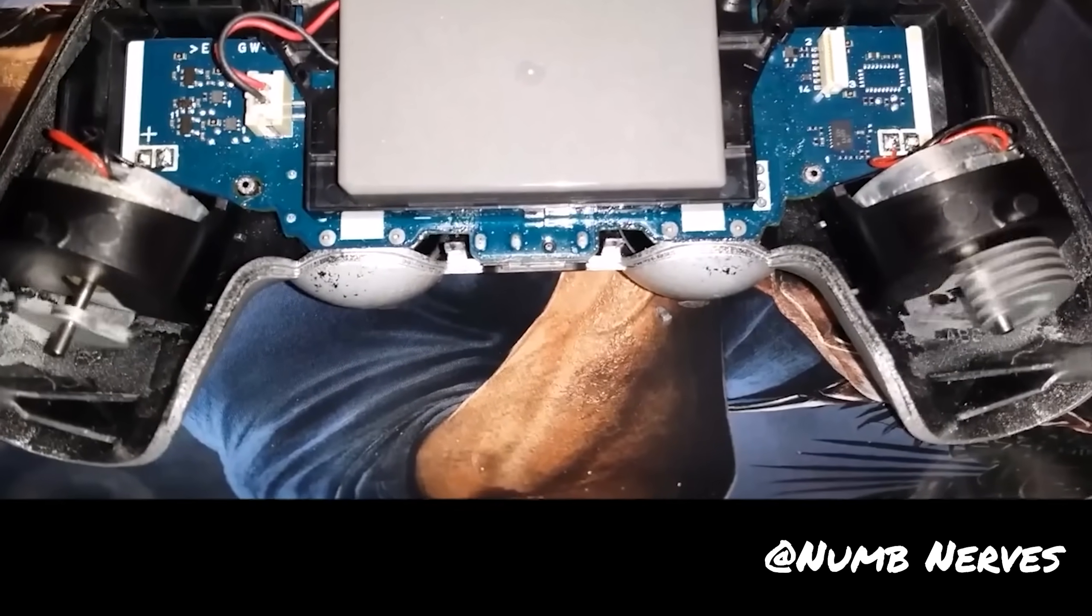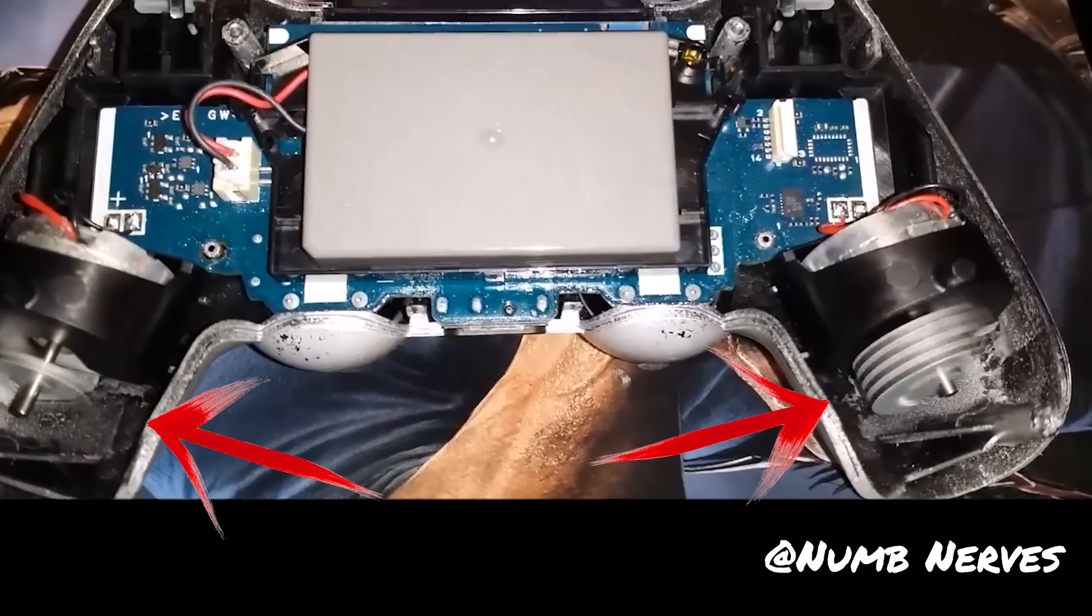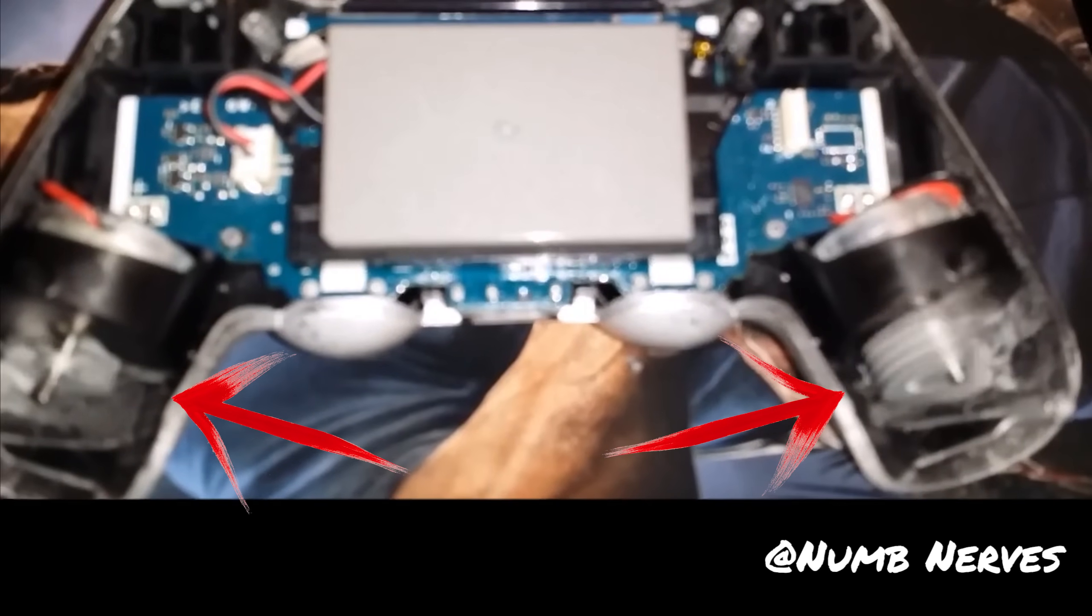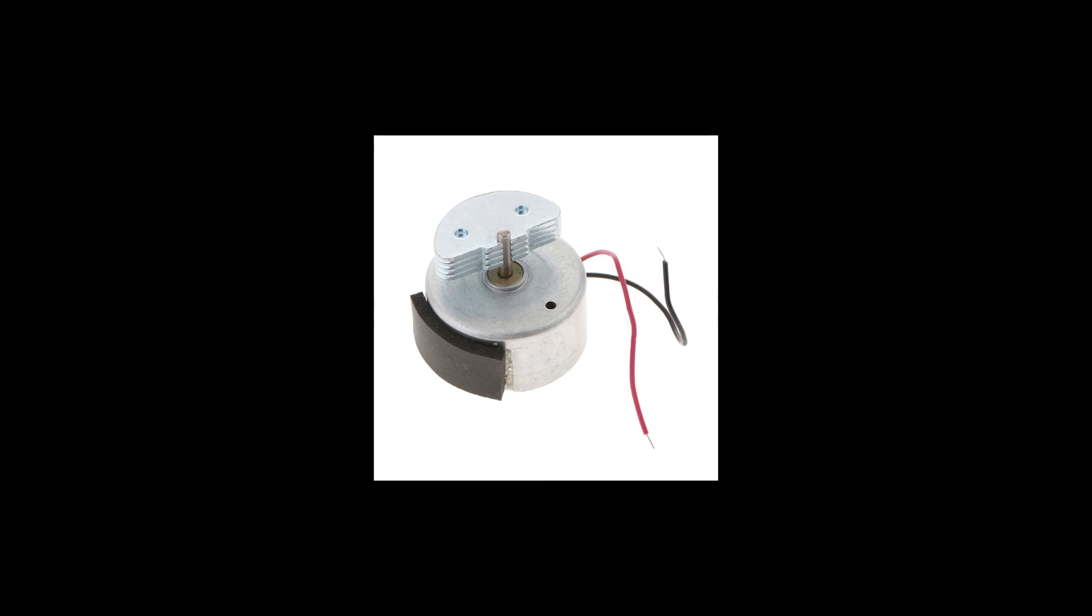And I could imagine a lot of you guys do too. The reason for that might be because rumble motors aren't very accurate. They typically only provide vibration to a single part of the controller and for the most part take time to wind up and time to stop, because you can't just make a physical piece of metal like our semicircle just instantly stop moving.